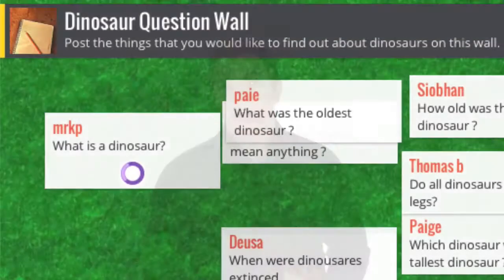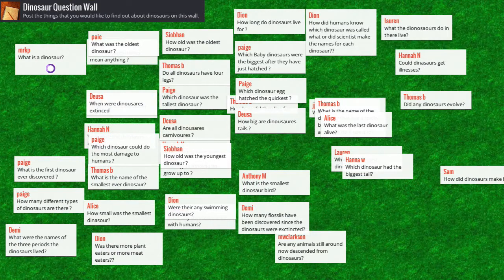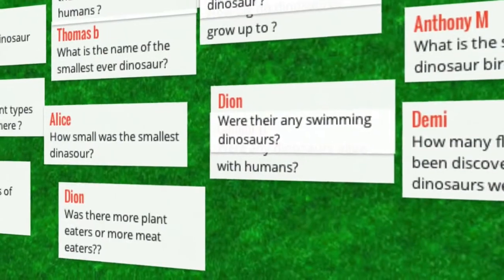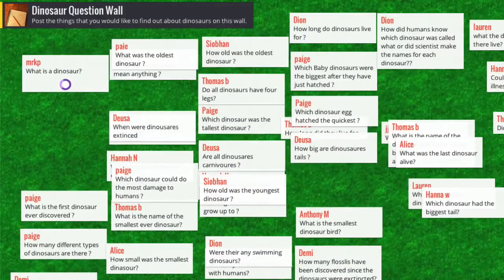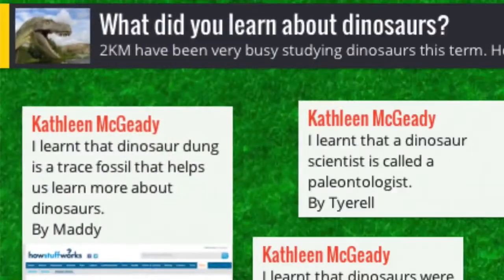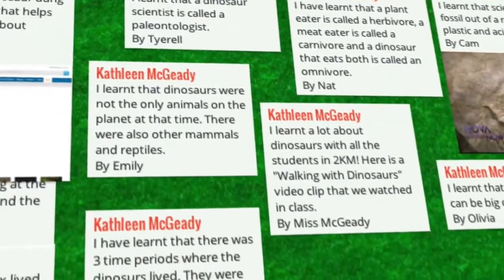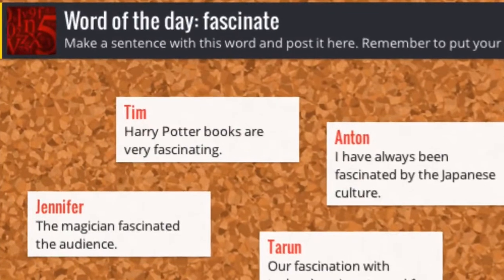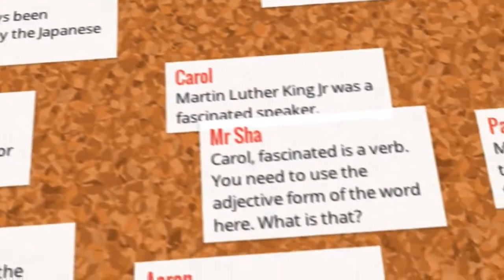Steve Kirkpatrick's elementary students in Salford, UK posted to their Dinosaur Question Wall. You can see sticky notes with questions like, 'How many different types of dinosaurs are there?' and 'Were there any swimming dinosaurs?' These questions served as investigation topics. Kathleen McGrady's second grade students contributed to a wall to share what they learned after their dinosaur unit. Mr. Shaw and his English students use the word of the day in a sentence, and he's even able to use a sticky note to give feedback.